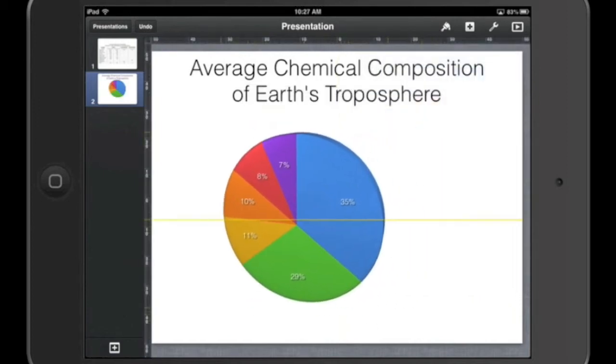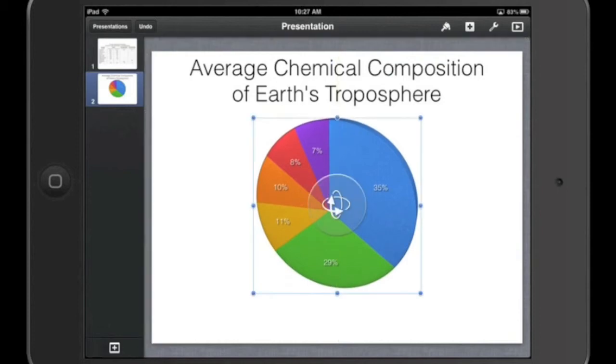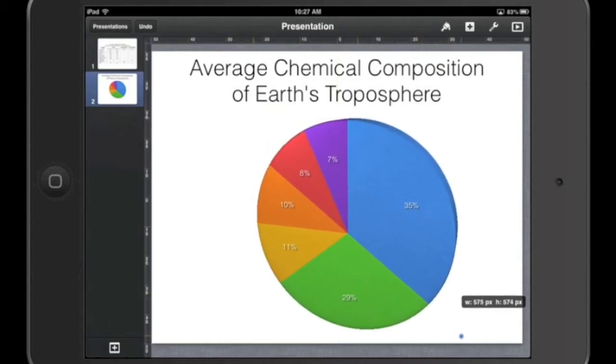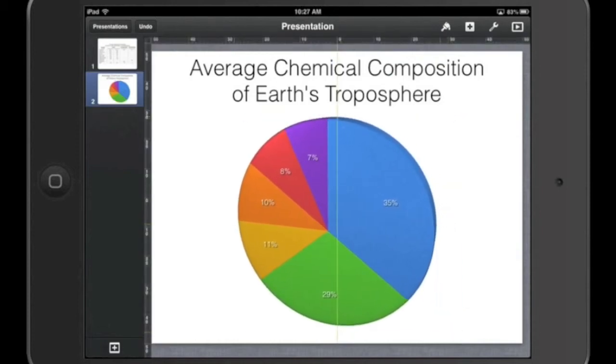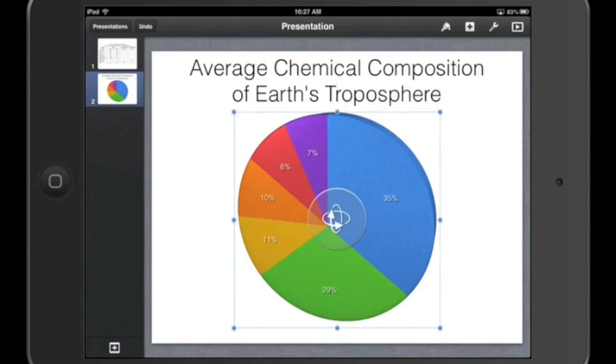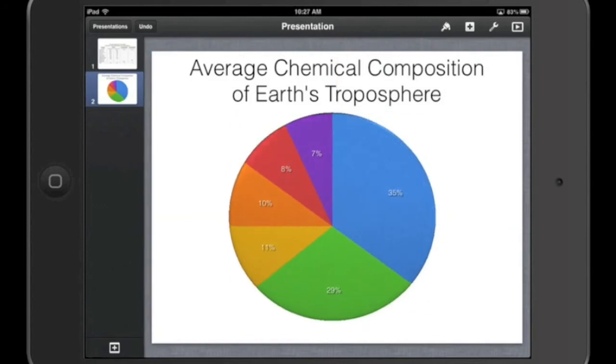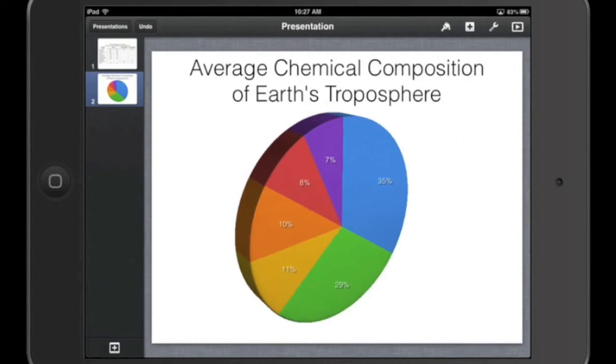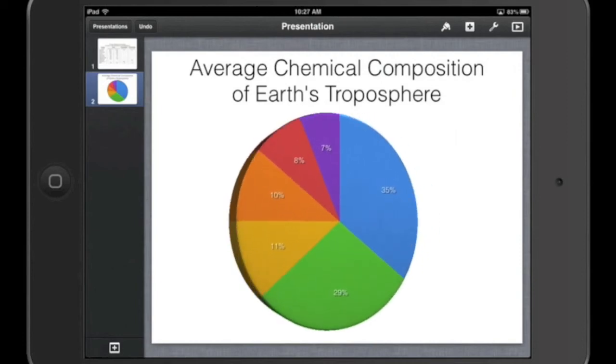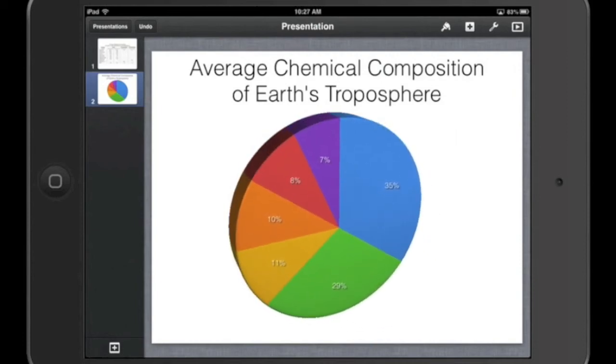So now I have a pie chart. I can move it around the screen however I want. I can also resize it using the little corners, just like you would with any element on a Keynote slide. If you notice this icon in the middle with the arrows, if you touch that and twist it a little bit, you can actually change the orientation of the slide, which, as you can imagine, students love doing.